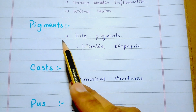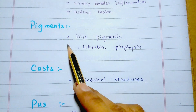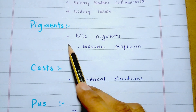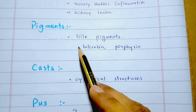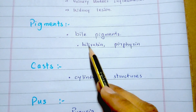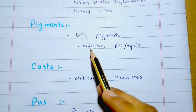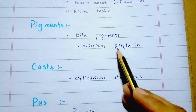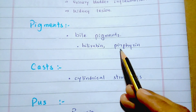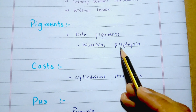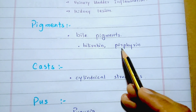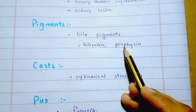Abnormal urine can also contain bile pigments, which may be bilirubin or porphyrins, produced by the breakdown of heme in the body.